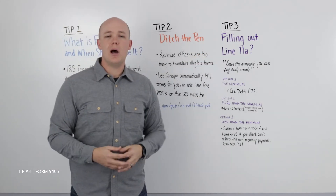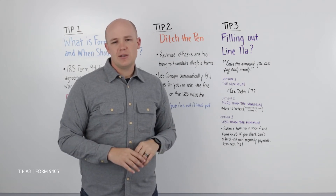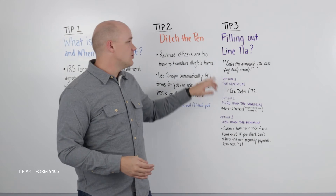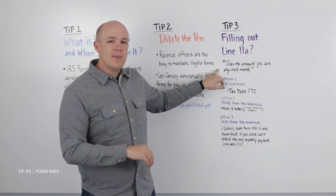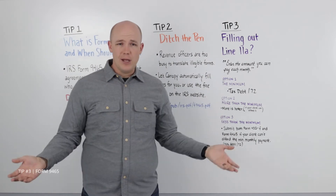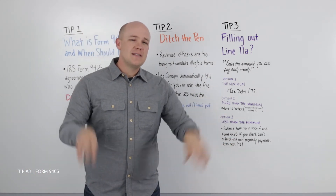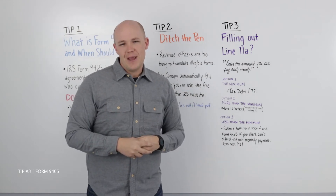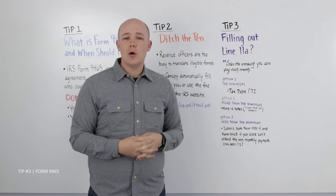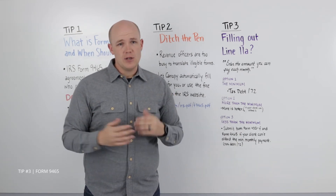Tip number three: how much do you put on line 11A? Most of the fields on the 9465 are self-explanatory. However, line 11A instructs you to enter the amount you can pay each month, which means you have a choice to make. Option number one is the minimum. The IRS sets the minimum monthly payment at the tax debt divided by 72. So if your client owes $64,800, the minimum monthly payment would be $900.